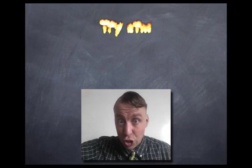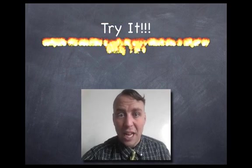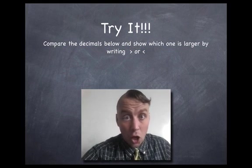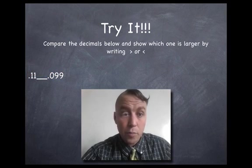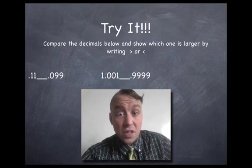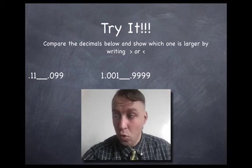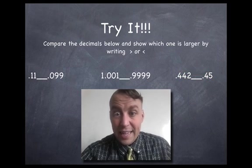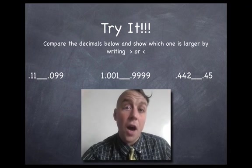We're going to try it. I want you to try these three problems. It's going to be the same deal. Back it up and check out those two steps if you need to. Write a greater than or less than symbol - have the alligator eat the larger number - for the following three problems: .11 and .099, or 11 hundredths and 99 thousandths. 1.001 or 9,999 ten-thousandths - whoa, that's some next level decimal place value there. Or finally, the last problem I want you to try is 442 thousandths or 45 hundredths.